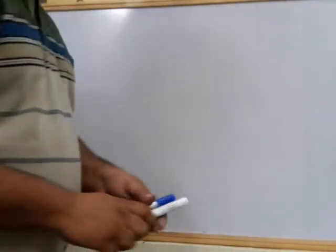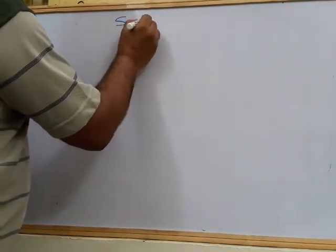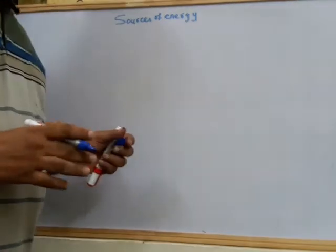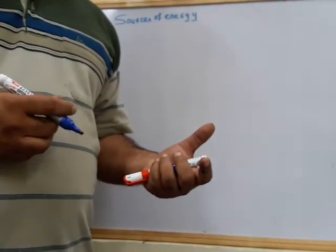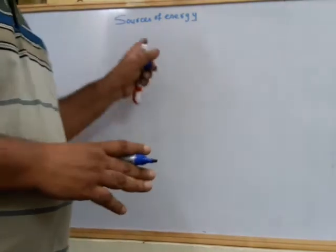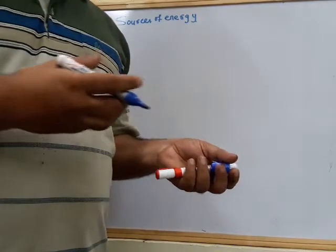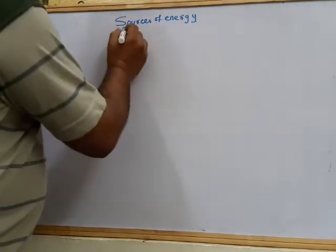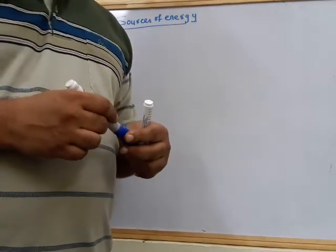Today we'll be seeing about the sources of energy. Energy sources means those substances from which we can readily take out energy with some process. That is known as the sources of energy. There are some materials and substances from which we can readily take out energy, and those materials can be called sources of energy. In your neighborhood or surroundings, you find various sources of energy.